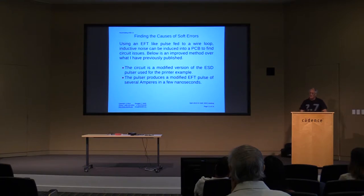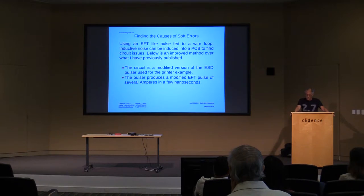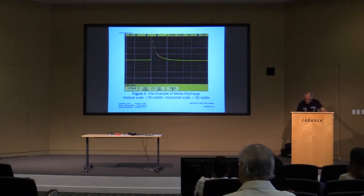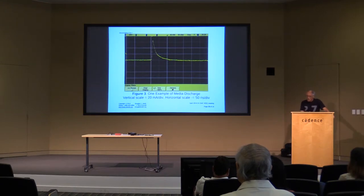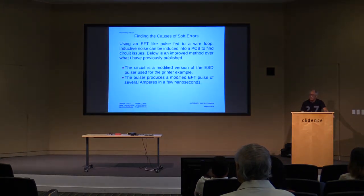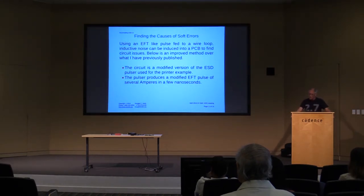I used an EFT-like pulse — electrical fast transient, one of the European norms that simulates high-voltage pulses on the power line from sparking contacts. Its characteristic is a fast rise time and a very slow fall with no overshoot. These measured waveforms from the printer looked exactly like EFT waveforms. It's a modified version of something I use for ESD troubleshooting.